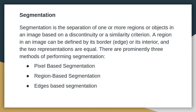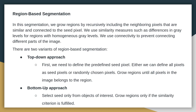The three types of segmentation are: pixel-based segmentation, region-based segmentation, and edge-based segmentation. In region-based segmentation, we grow regions by recursively including the neighboring pixels that are similar and connected to the seed pixels. We recursively grow the neighborhood pixels based on similarity.